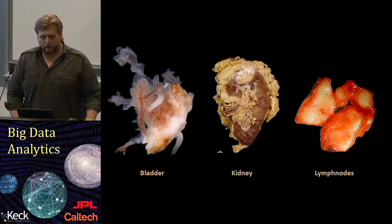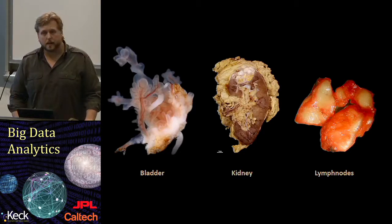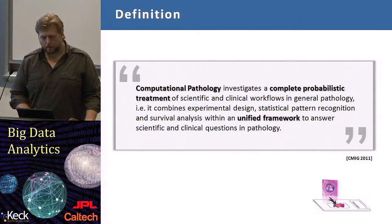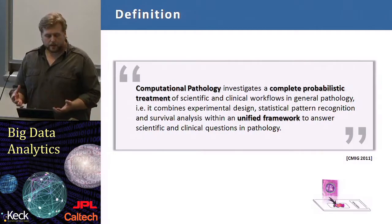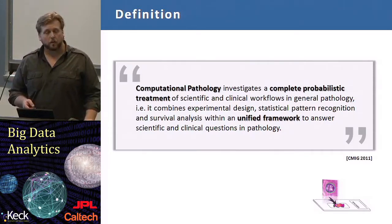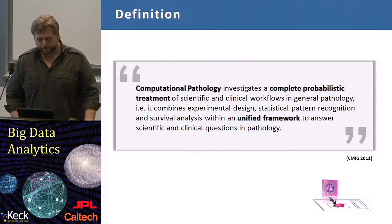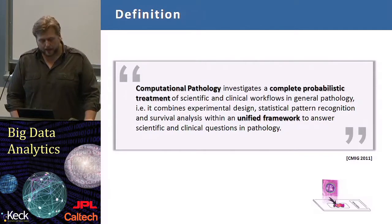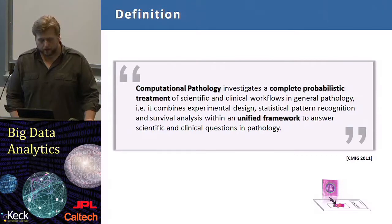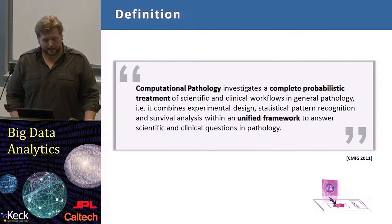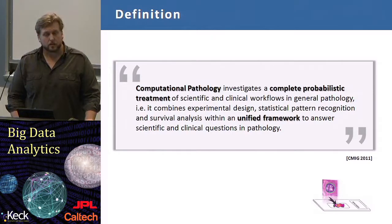In this module, I will show an example from kidney cancer — clear cell renal cell carcinoma. The application falls into the domain of computational pathology, which is a very new domain. It's defined as the investigation of a complete probabilistic treatment of scientific and clinical workflows in general pathology, combining experimental design, statistical pattern recognition, and survival analysis within a unified framework to answer scientific and clinical questions in pathology.